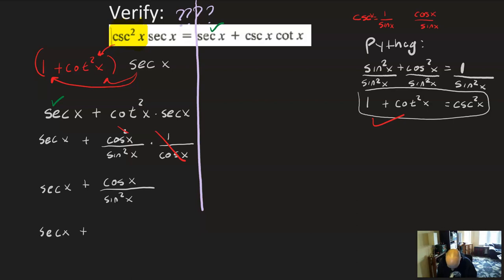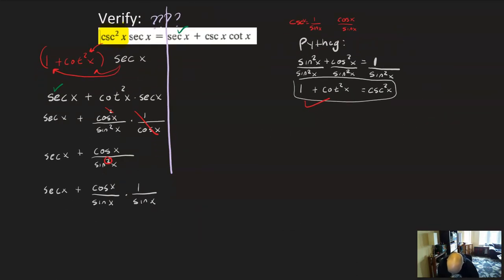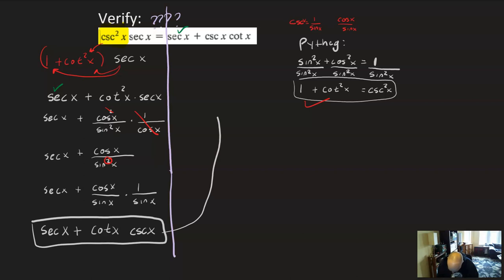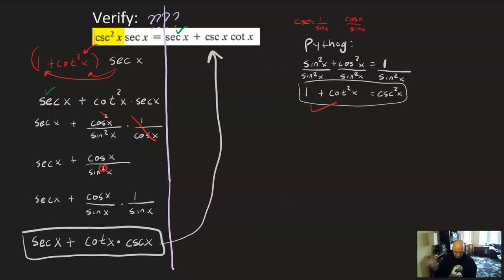One more line completes the proof: sec x + (cos x/sin x) · (1/sin x) = sec x + cot x · csc x, which is equivalent to the right side. The cosecant and cotangent were in a different order, but multiplication is commutative. That identity is verified — it took a lot of pre-work and thinking ahead, but the actual process came down in just a few steps.